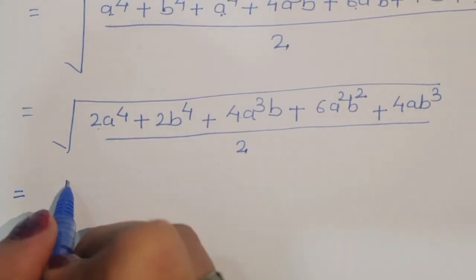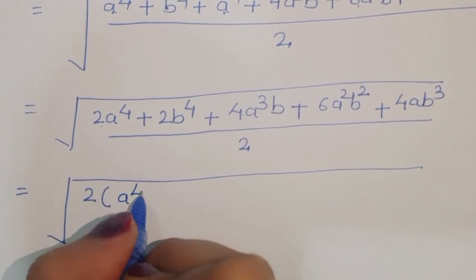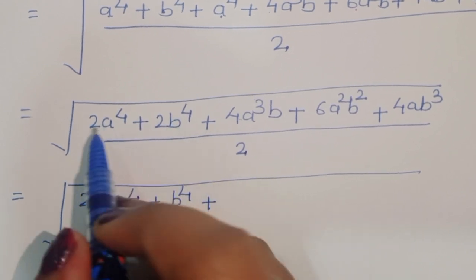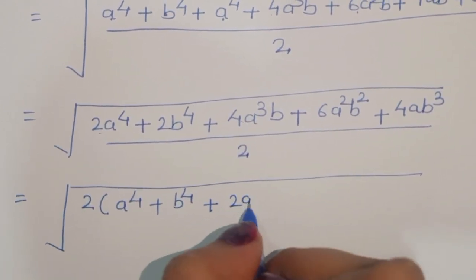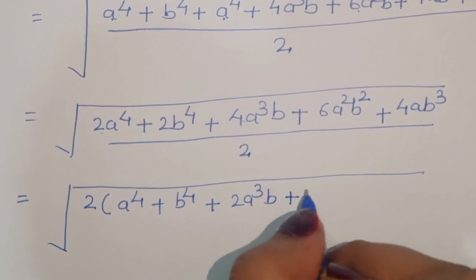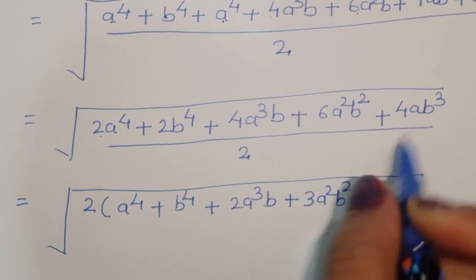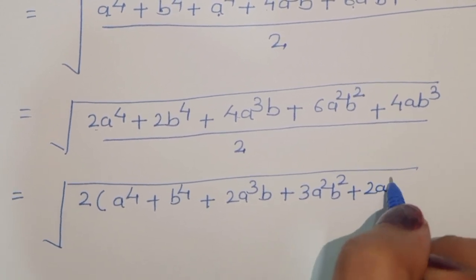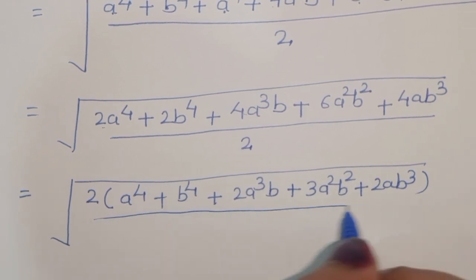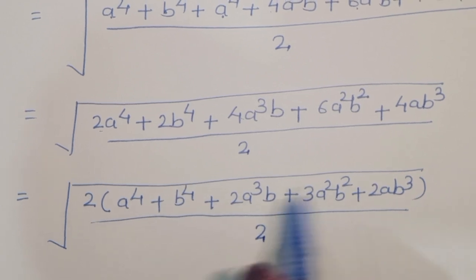Since 2 is common in all terms, we can cancel it. So we get: a⁴ plus b⁴ plus 2a³b plus 3a²b² plus 2ab³.